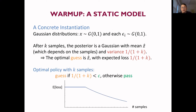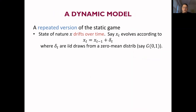So we can work out exactly what the optimal policy is as a function of the number of samples. If the number of samples is large enough that 1 over 1 plus K is less than C, then guessing is better than passing and I should guess. But if I took too few samples so that 1 over 1 plus K is greater than C, then I should pass and take the outside option C. This is the expected loss as a function of the number of samples — certainly more samples is better.